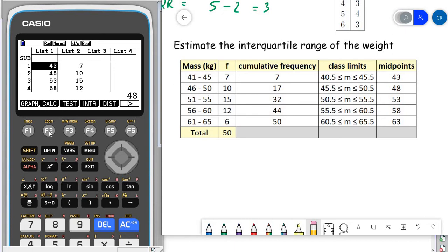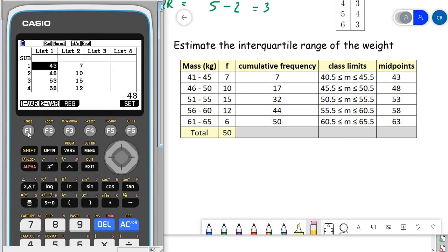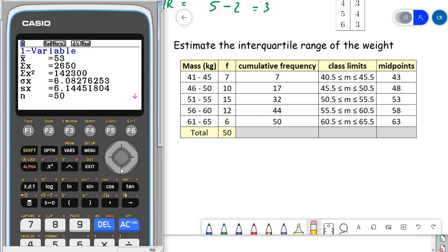And then we can press calc and set and just check. Yep, my data is in list 1, my frequencies are in list 2, that's fine. And 1 bar. And we've got the mean and so on. Let's scroll down.